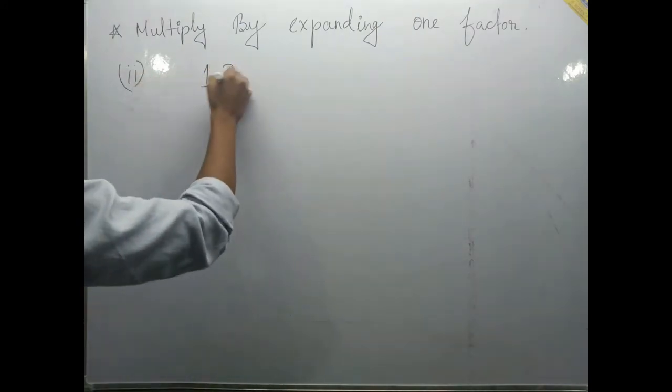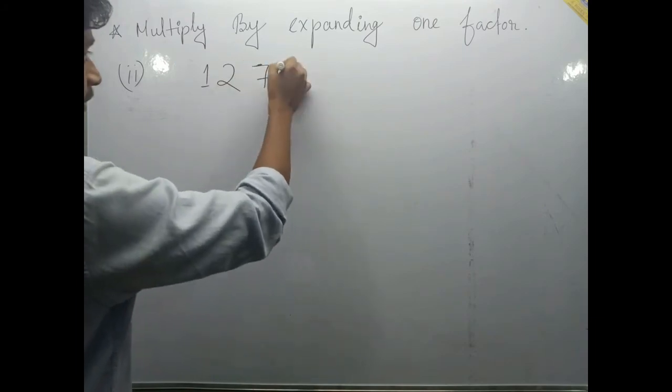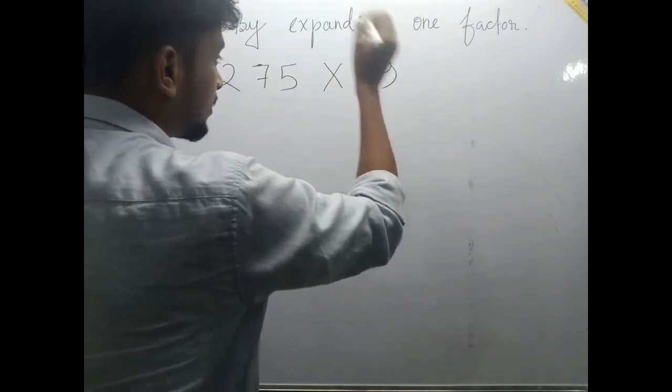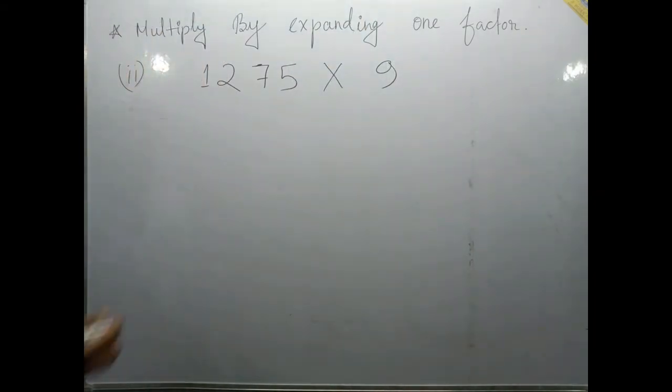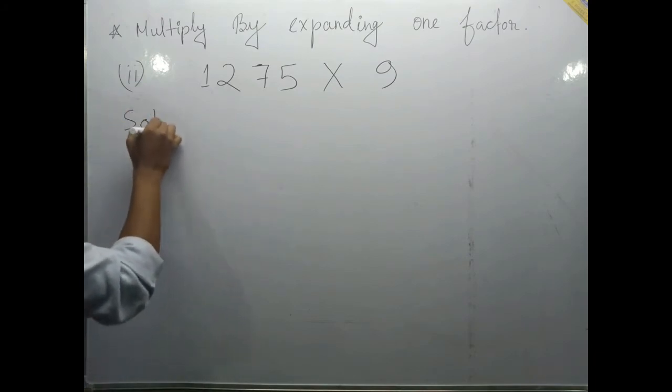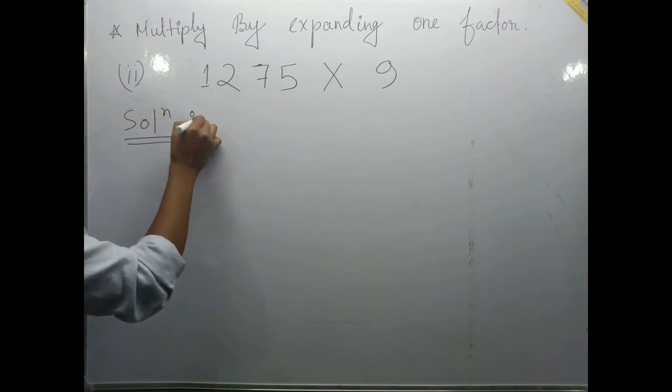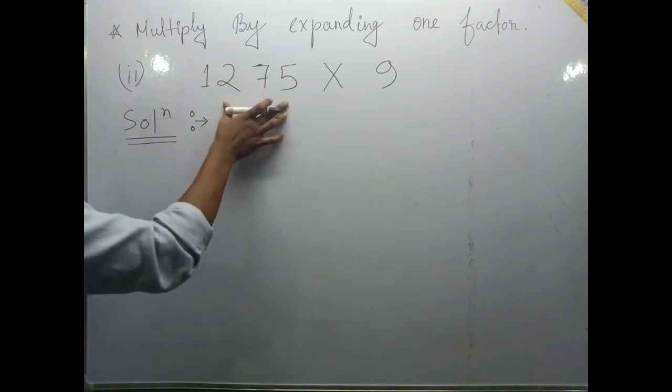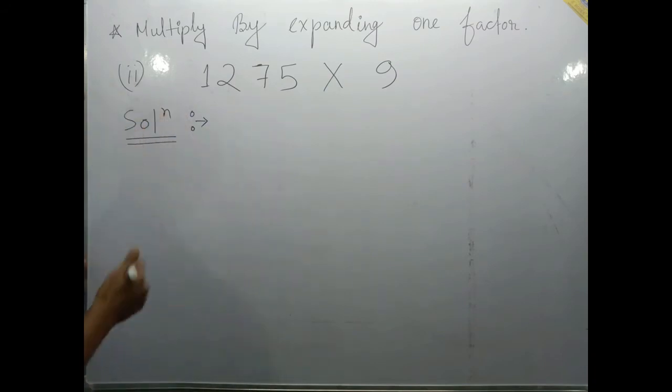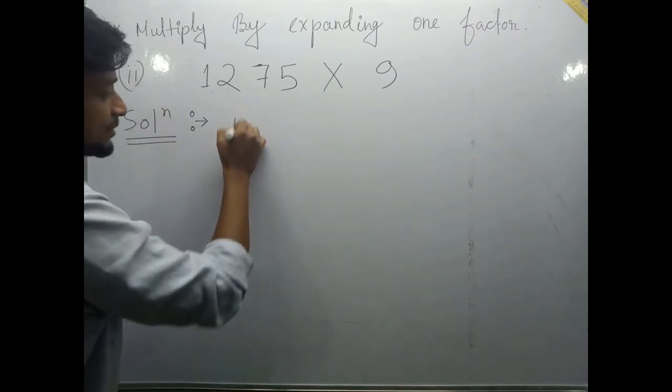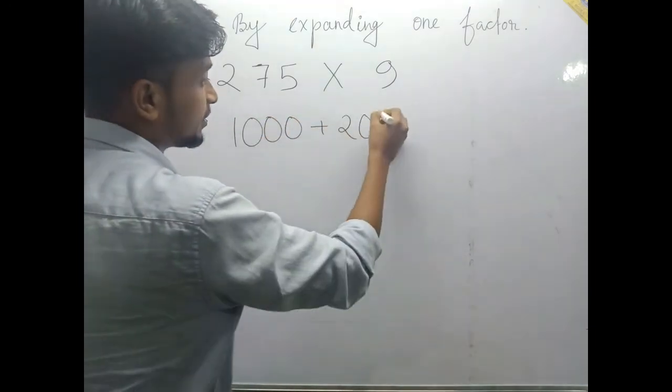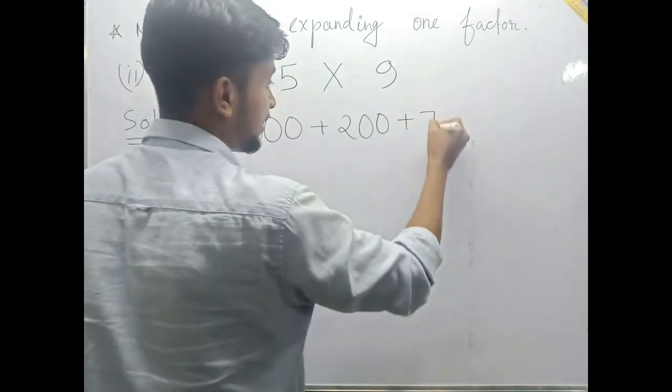Suppose 1275 multiplied by 9. Now how we have to expand this number? We will expand which number? Obviously the bigger number. We will expand 1275.